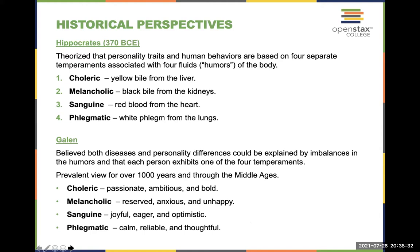Humans have been thinking about personality for a very long time. Hippocrates, around 370 BCE, theorized that personality traits and human behaviors were based on four separate temperaments associated with four fluids called humors of the body. The first is choleric — yellow bile from the liver.